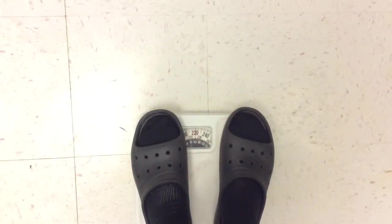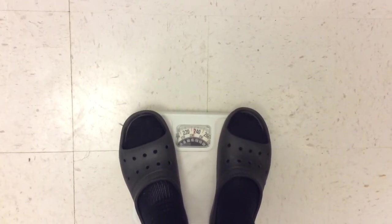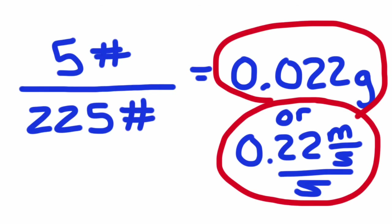So what did my scale move? Like 5 pounds in either direction? So if I weigh 225 and it moves 5 pounds, that's about 0.022 g or 0.22 meters per second every second.